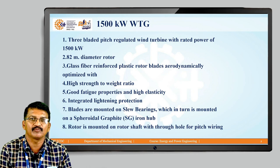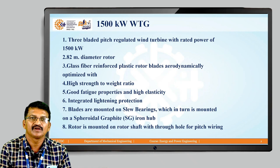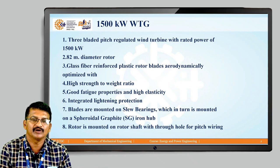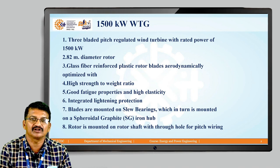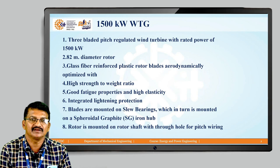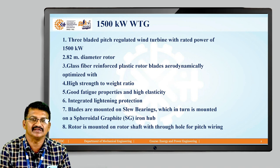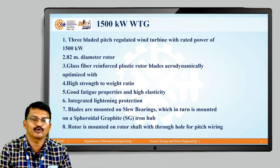For a 1500 kilowatt wind turbine generator — a three-blade pitch-regulated wind turbine with rated power of 1500 kilowatt or 1.5 megawatt — about an 82-meter diameter rotor is required. Power is one-half rho A V cubed, so area A = pi/4 × d², where d is 82 meters. Glass fiber reinforced plastic rotor blades are used, which are aerodynamically optimized with high strength-to-weight ratio, good fatigue properties, high elasticity, and integrated lightning protection — very important in the rainy season, as lightning is a major problem for wind turbine generators.